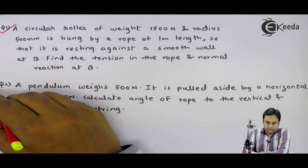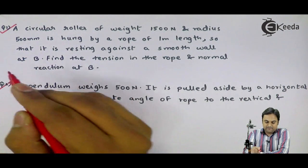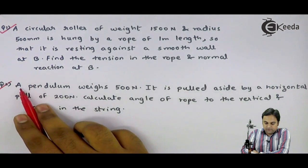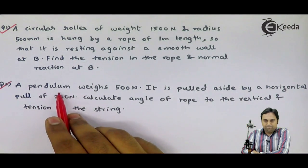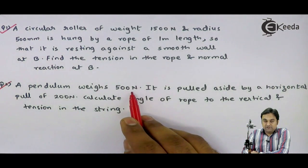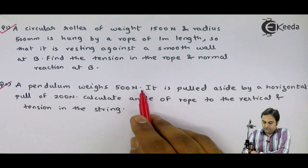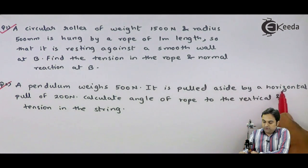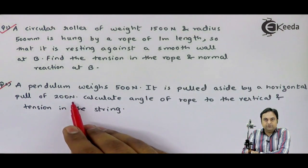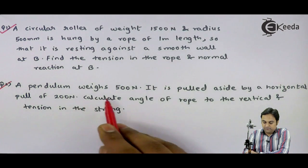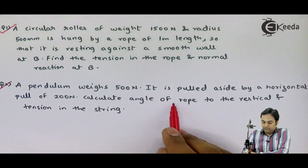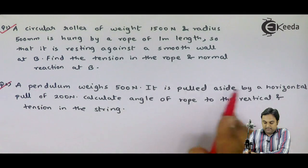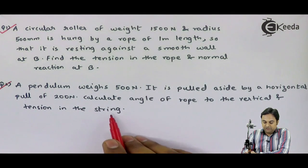Let us solve question number 2. A pendulum weighs 500 Newton. It is pulled aside by a horizontal pull of 200 Newton. Calculate the angle of the rope to the vertical and the tension in the string.